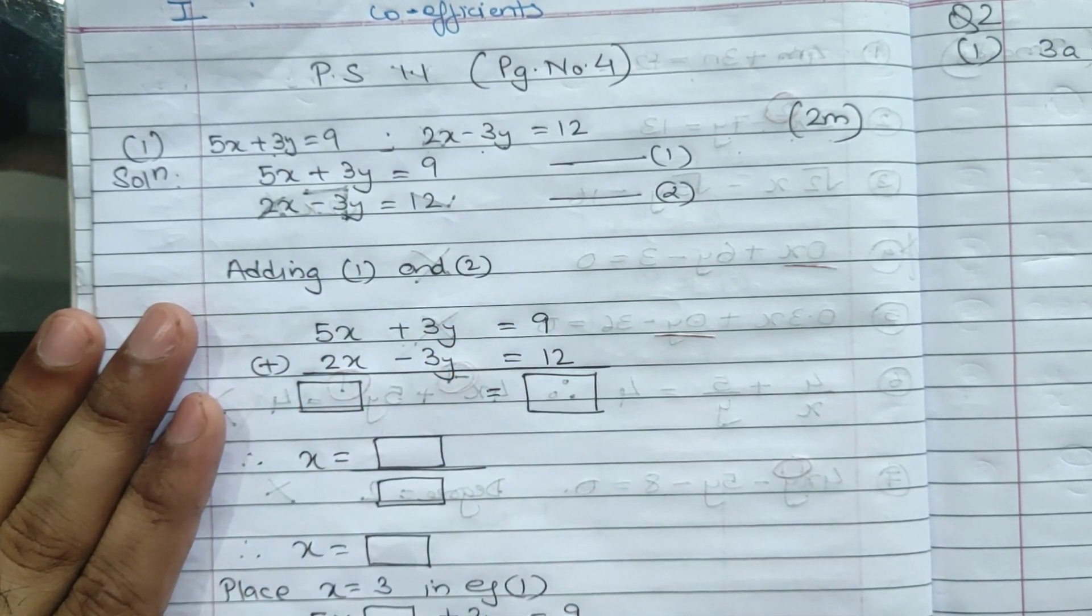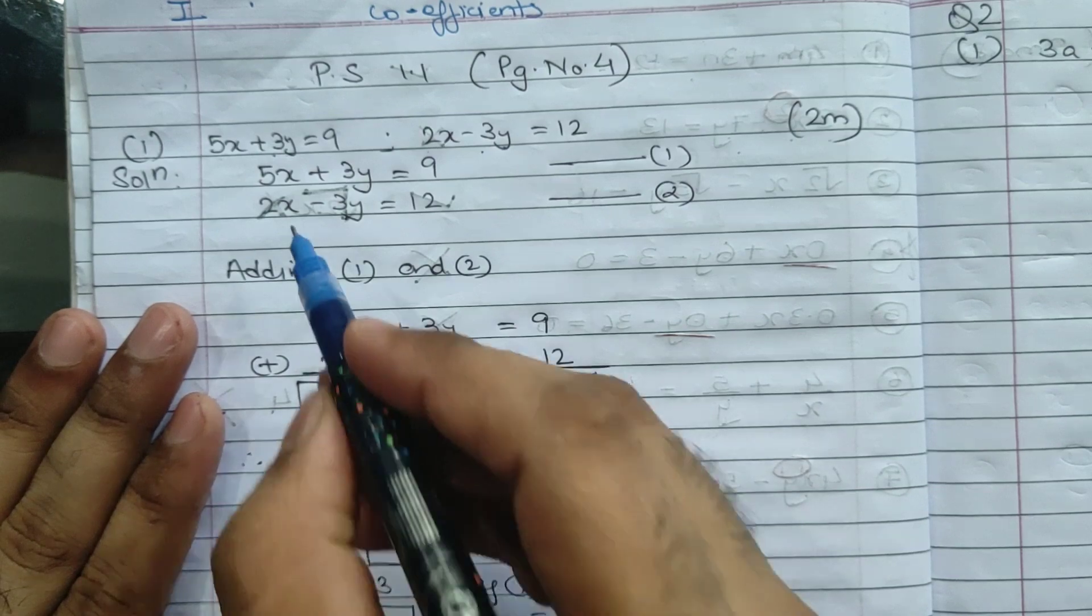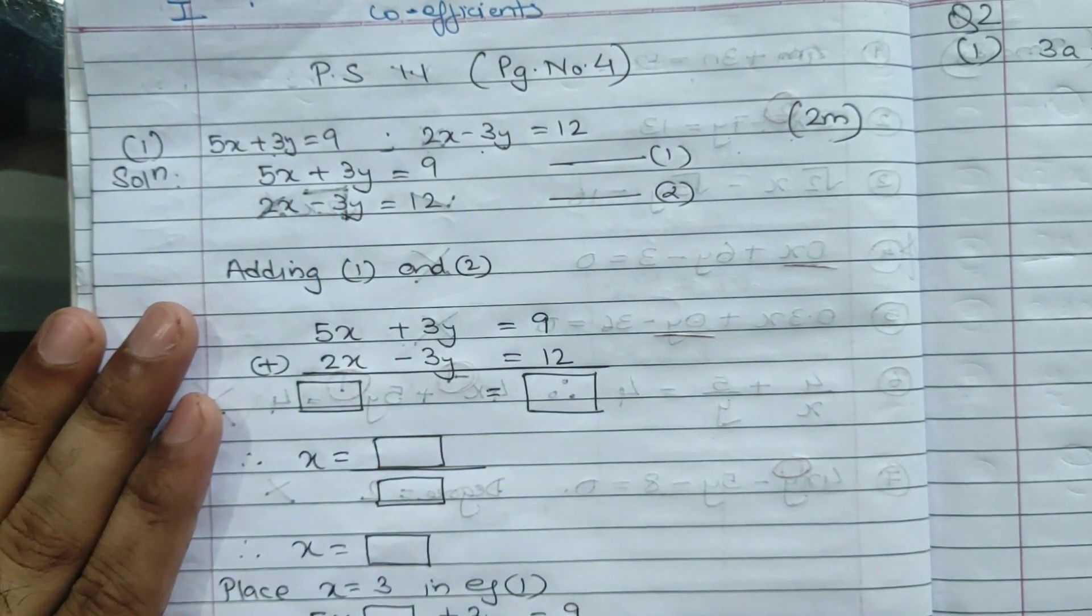Why are we adding? Because the signs are different - here 3y is plus and here it's minus. When the sign is different, we should always add the equations. If the sign is the same, we will subtract.